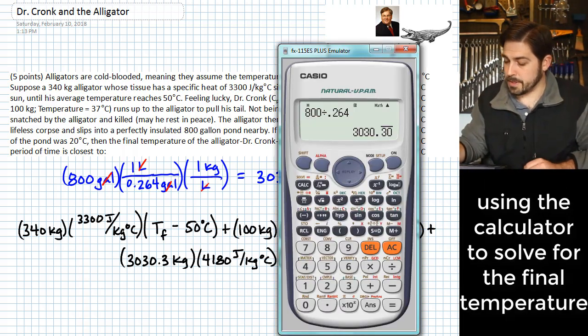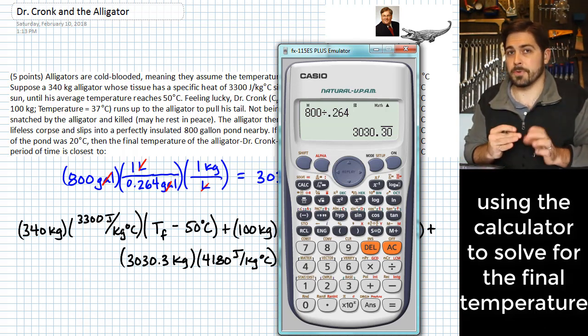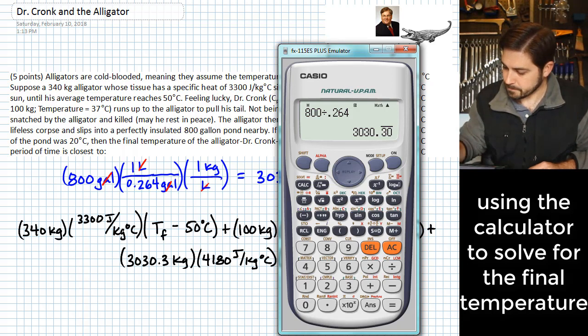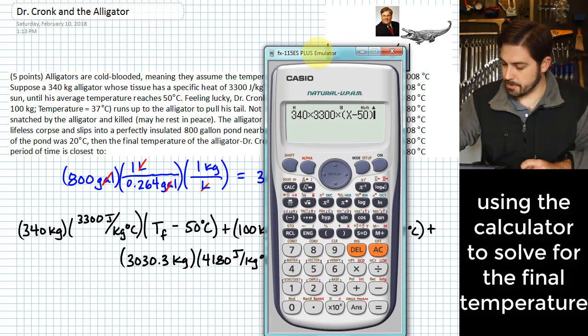And what we're ready to do at this point is use the calculator and enter this whole expression so that we can solve for the variable that we are looking for. So we put in 340. We multiply that by 3300. We're then multiplying this by our variable that we would like to solve for minus 50. That takes care of that first term there.